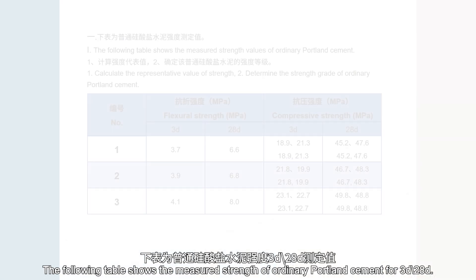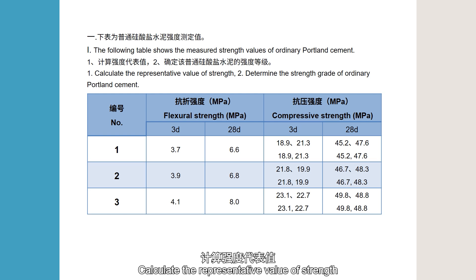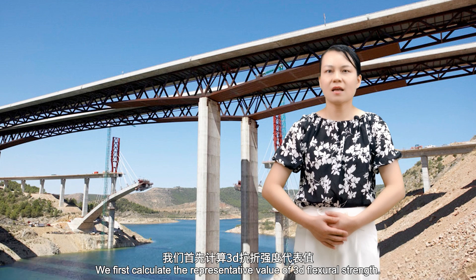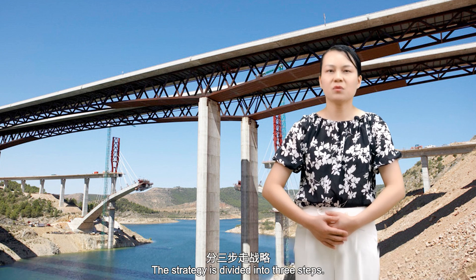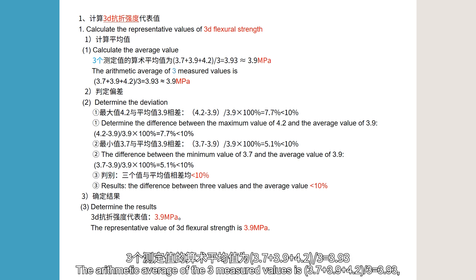Let's look at a case. The following table shows the measured strength of ordinary Portland cement at 3 days and 28 days. We need to calculate the representative value of strength and determine the strength grade. We first calculate the representative value of 3-day flexural strength using three steps. Step 1: Calculate the average value — the arithmetic average of the three measured values is (3.7 + 3.9 + 4.2) ÷ 3 = 3.93.